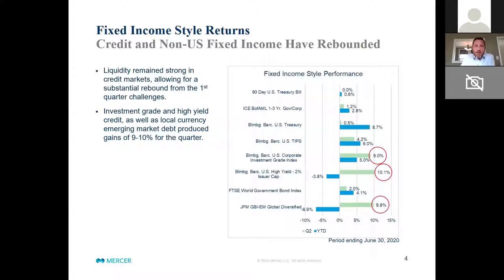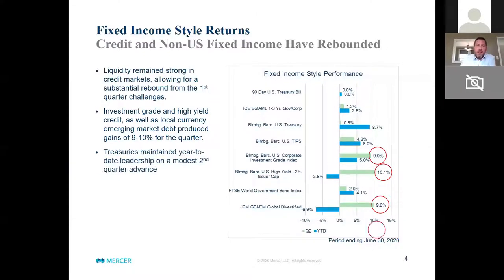For the quarter, we saw big bounces in investment grade. The Bloomberg Barclays US Corporate Investment Grade index was up 9 percent. High yield was up a little bit more than 10 percent. Outside of the US, emerging market debt was also up close to 10 percent — the JP Morgan Global Bond Index EM Global Diversified was up 9.2 percent. Despite the recovery, Treasuries still maintained their year-to-date leadership, up only about 50 basis points for the quarter but up 8.7 percent for the year-to-date period through the first six months of 2020.